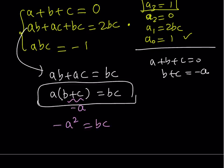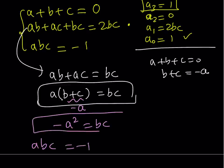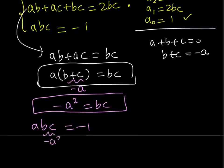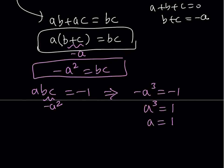From the third equation, abc equals negative 1. We can replace bc with negative a squared, giving a times negative a squared equals negative 1, so negative a cubed equals negative 1, which means a cubed equals 1, and therefore a equals 1 for the real solution.